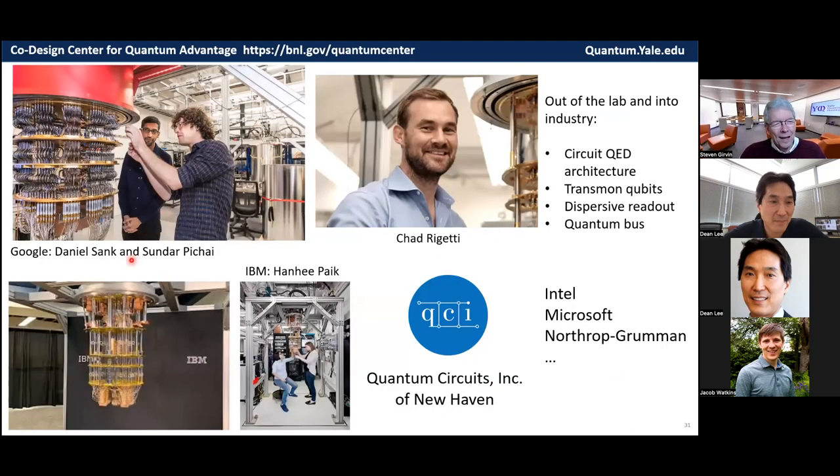And so the information lives for a long time inside the excitations of the artificial atoms, the quantum bits, and also as microwave photons. And all the current industrial systems being built in the world today are direct massive engineering scale-ups of this first very crude device from only 13 years ago. So here's my former student, Daniel Stank, with the head of Google. You can see a much bigger machine here. Here's Chad Rigetti, who was a postdoc with Michelle Devore, has a startup company in Berkeley. This is Honey Pike now at IBM, along with many of our other graduates. And you see these huge, fancy machines that they're developing. Many, many companies and startups are now working in this area.